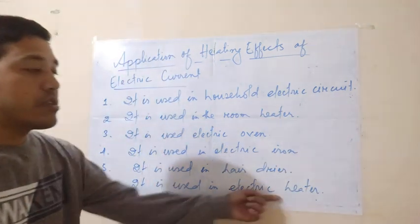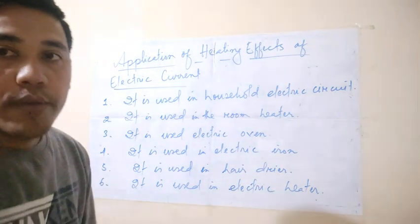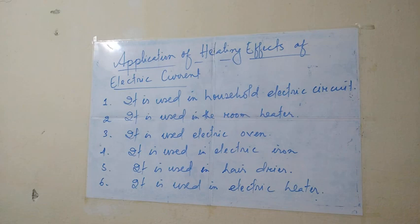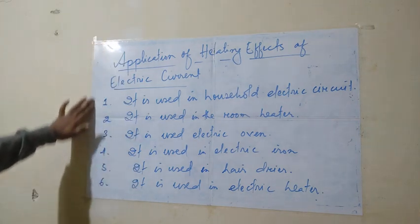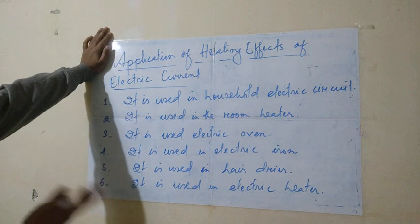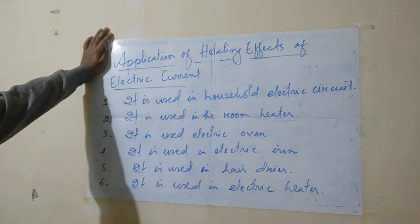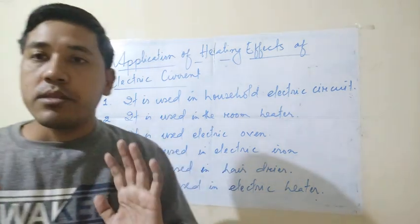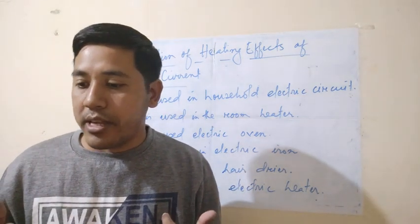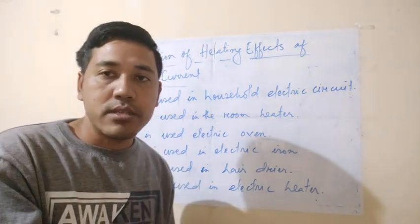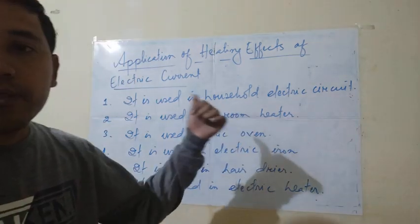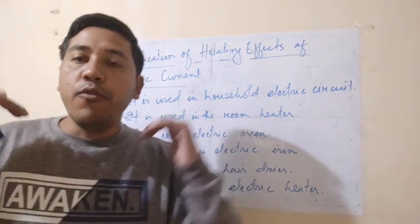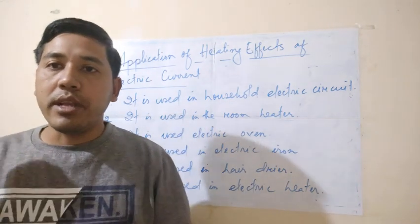This electric heater is used for making our food items. Please copy down these applications of the heating effects of electric current. This is one of the most important parts. The same topic you will learn in class 10 also. This is the third video of class 7 science chapter 14. Please watch this video carefully. If you have any doubt or confusion, let me know.